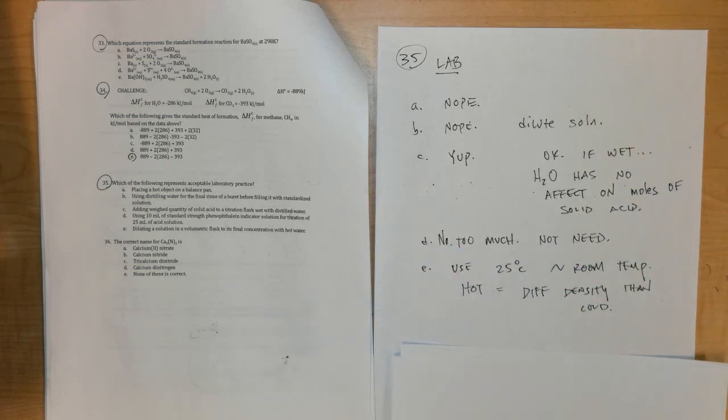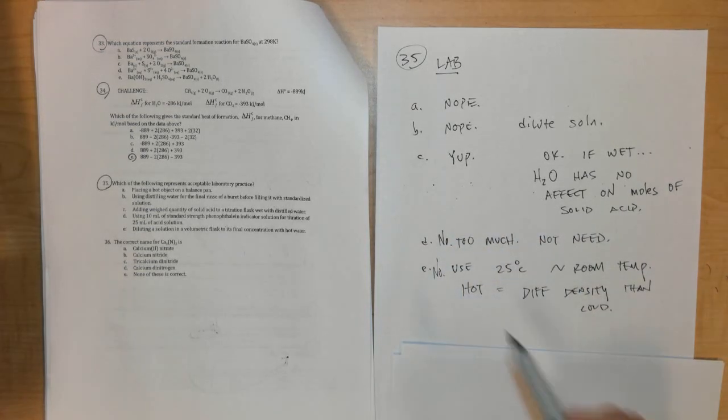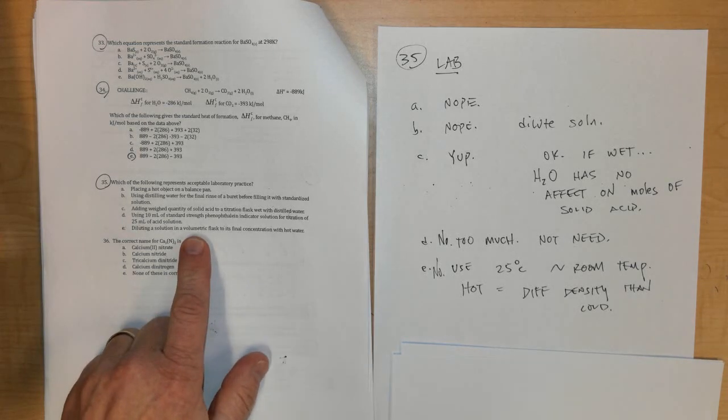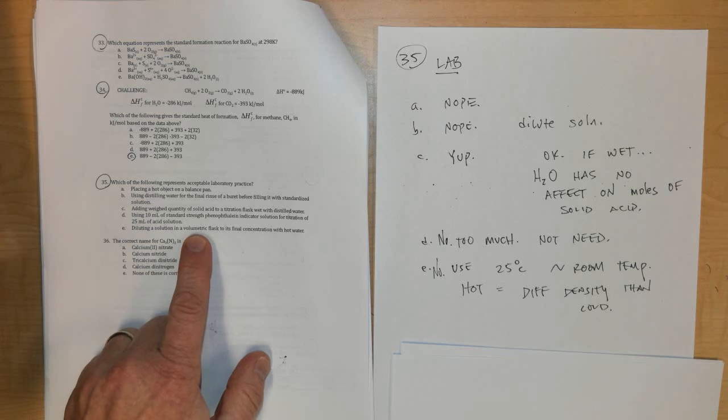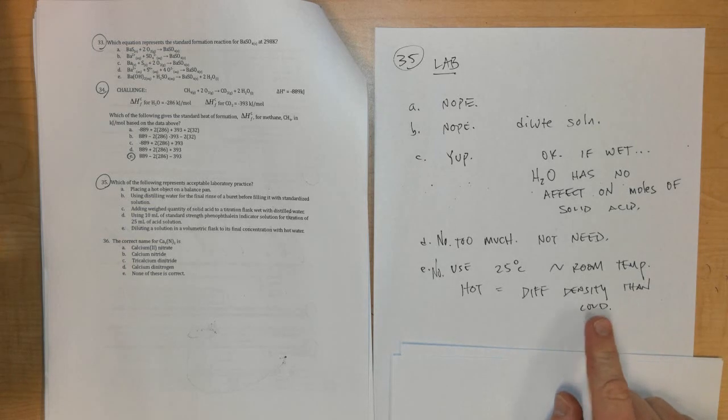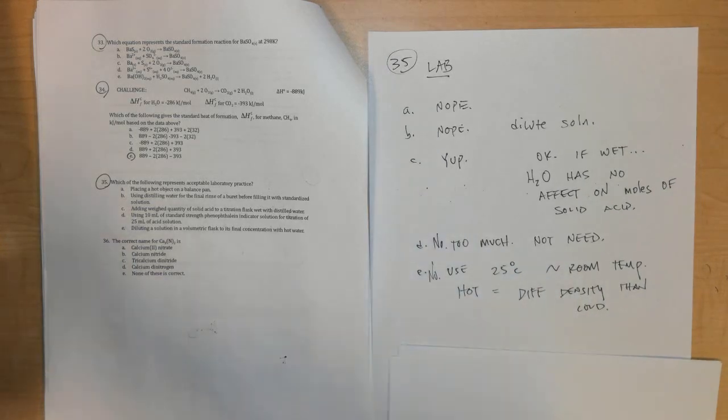You don't need 10 milliliters with it, so it's a waste of phenolphthalein solution - an indicator solution, you never need that much of it, a few drops usually is all that's needed. And then in letter E: diluting a solution in a volumetric flask to its final concentration with hot water - nope, you can't do this. You never want to use water that's super hot because it'll have a different density than cold, and therefore when it returns to room temperature or whatever the temperature is (25 degrees Celsius approximately), the water actually has a different density and therefore the volume that it occupies might change just a tiny bit. Since you're using a very intricate piece of glassware called a volumetric flask, you want to be as accurate as possible with it, and that shrinkage might cause your concentration to be different. So C is the best answer.